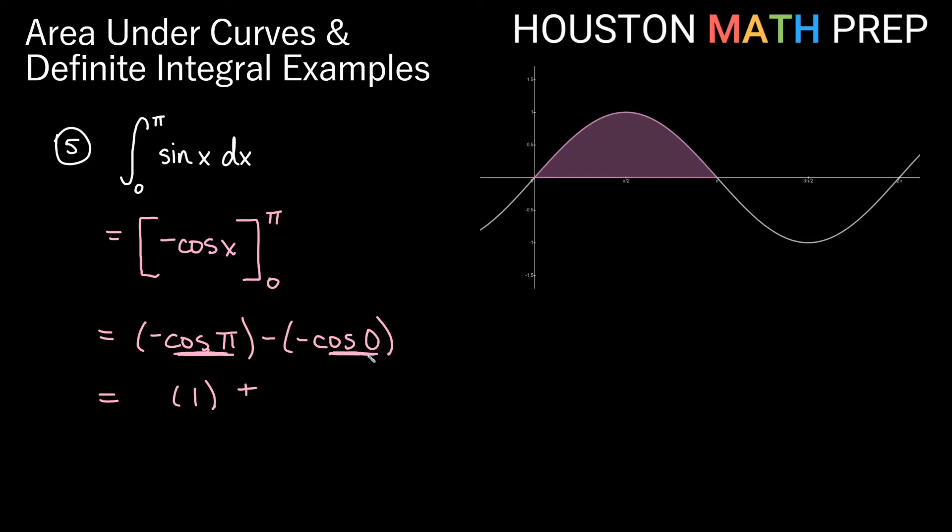And then here I have minus negative, I'll just call that plus. What is cosine of 0? Cosine of 0, 0 is an angle on the right side of the unit circle, so its cosine value is 1. So we get 1 plus 1 there, and that gives us 2. So actually, the area of one hump of the sine function here, we actually have two units of area there.